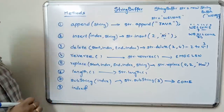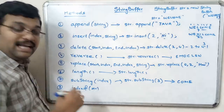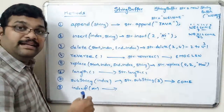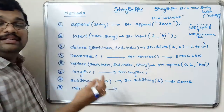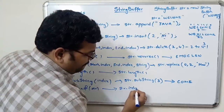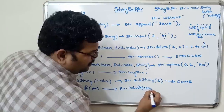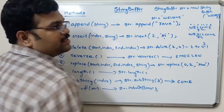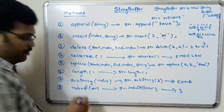The next method is indexOf(). We have seen this in the String class — the same rules apply here. It returns an integer: the starting index of the particular given string. So str.indexOf("come") — the index of this string starts from 3, so this will return 3 as output.